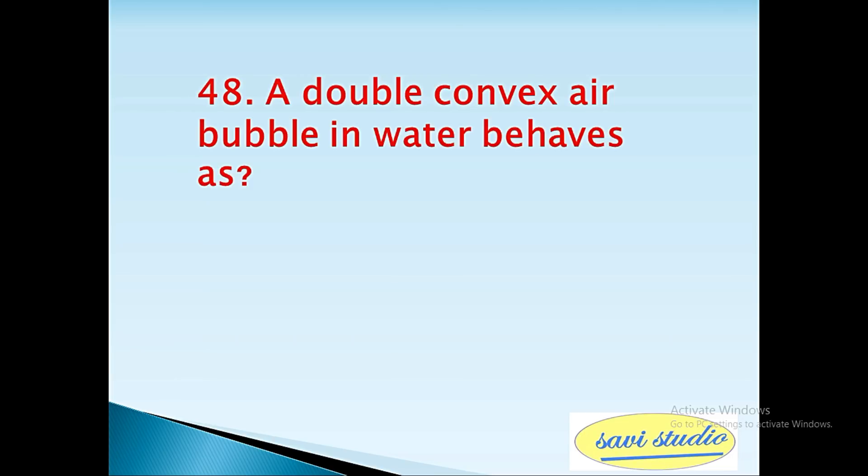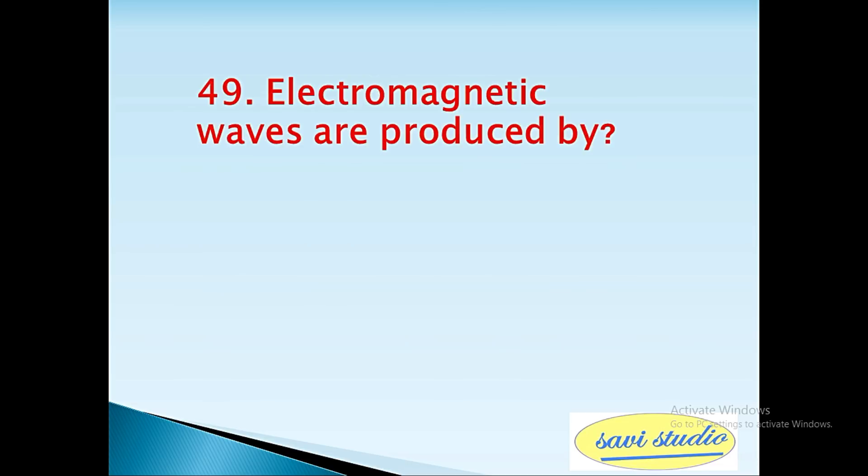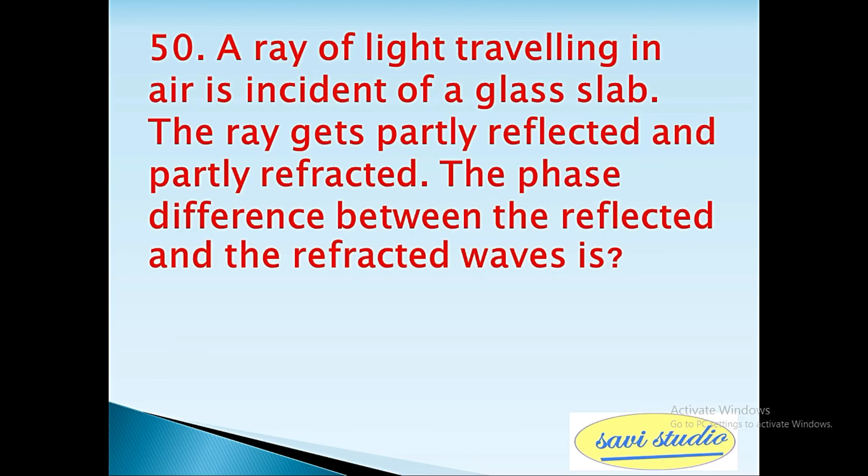48th question: A double convex air bubble in water behaves as? Answer: a diverging lens. 49th question: Electromagnetic waves are produced by? Answer: an accelerated charge. 50th question: A ray of light traveling in air is incident on a glass slab. The ray gets partly reflected and partly refracted. The phase difference between the reflected and the refracted waves is? Answer: 0.